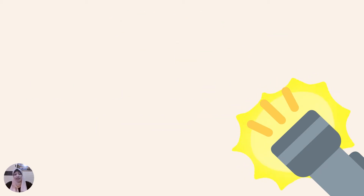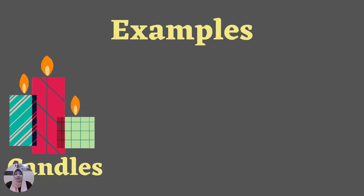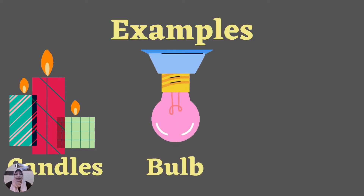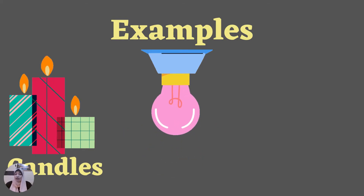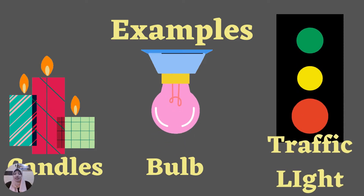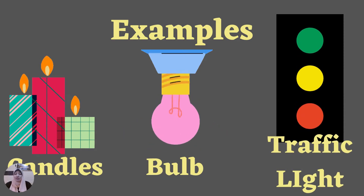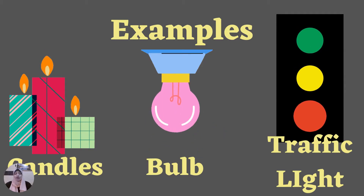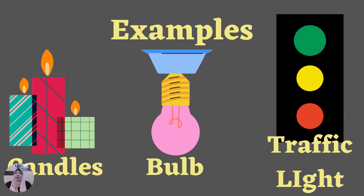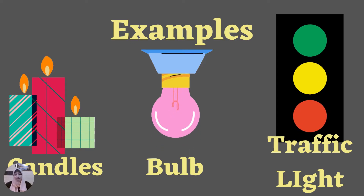What are the other examples? The candle — a candle is a man-made object and we can control the light of the candle. The light bulb — you can switch it on and off. Another example: traffic lights. Traffic lights are also a man-made source of light, and people can control these lights.